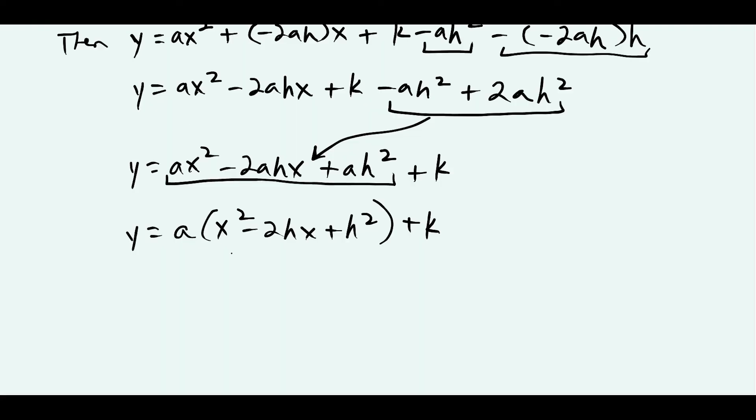From here, notice this inside quadratic is a perfect square trinomial. I can factor this as (x minus h) times (x minus h), which gives me (x minus h) squared.